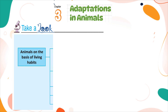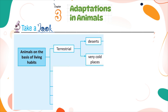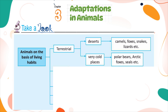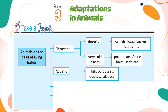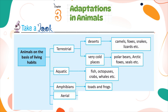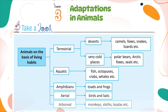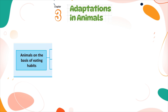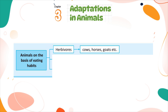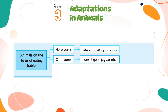Take a look — Animals on the basis of living habits: Terrestrial (deserts: camels, foxes, snakes, lizards; very cold places: polar bears, arctic foxes, seals); Aquatic: fish, octopuses, crabs, whales; Amphibians: toads and frogs; Aerial: birds and bats; Arboreal: monkeys, sloths, koalas. Animals on the basis of eating habits: Herbivores: cows, horses, goats; Carnivores: lions, tigers, jaguars; Parasites: lice, bed bugs, mosquitoes.